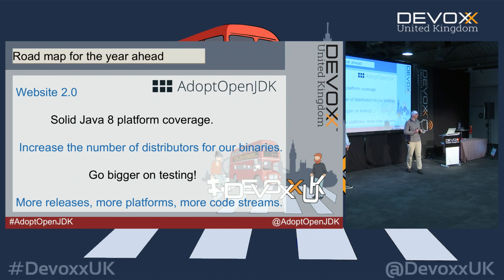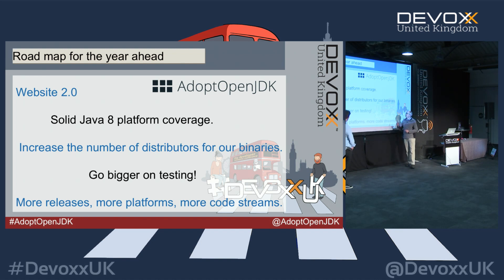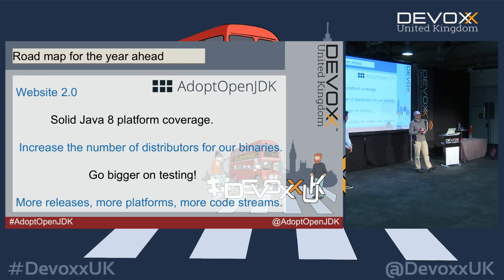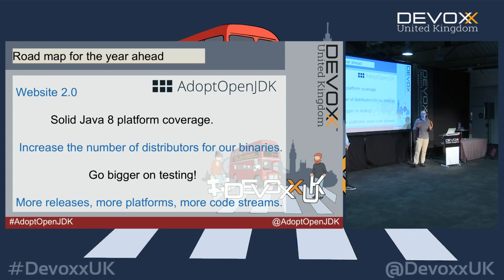We've put a support statement on our website: as long as people are maintaining security and bug fixes for Java 8 source, we will build it, test it, and redistribute it. We're also working on increasing the number of distributors for our binaries. Distributing through the website and API is fine, but we're looking to hook in to other big users or distributors of Java — people who own the pipeline out to where people get their Java today — to ensure these binaries are universally used and accepted.